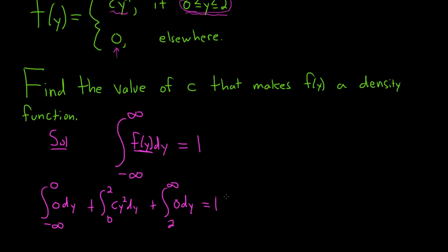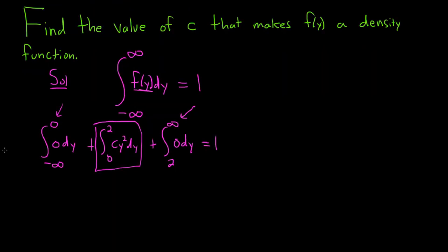This is a step that people often skip. Most people only write this piece here. The reason is this is going to be 0, and this piece on the right is also going to be 0. Let me just explain why really briefly.